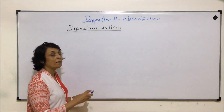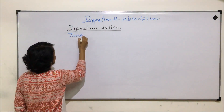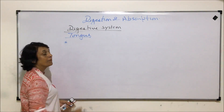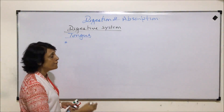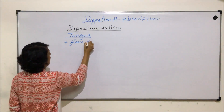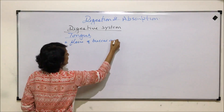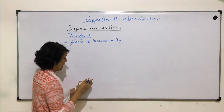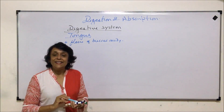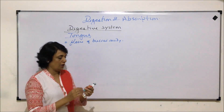Now in this segment we are talking about another structure, that is the tongue. The tongue makes the floor of the buccal cavity. It is free anteriorly and it is attached posteriorly.